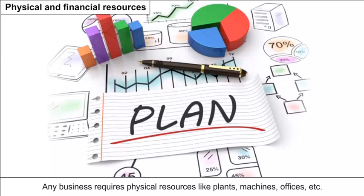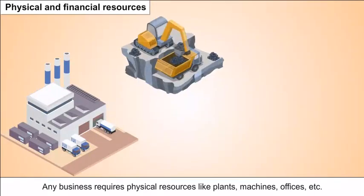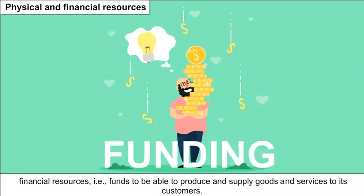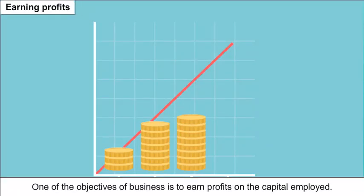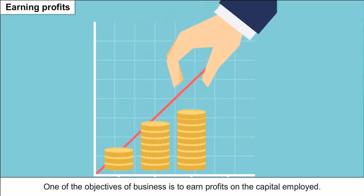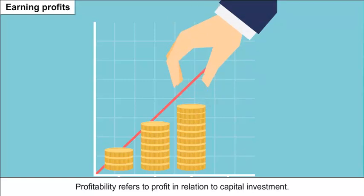Any business requires physical resources like plants, machines, offices etc. and financial resources — that is, funds — to be able to produce and supply goods and services to its customers. One of the objectives of business is to earn profits on the capital employed. Profitability refers to profit in relation to capital investment.